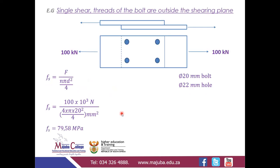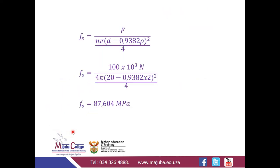Notice something important here: for the partially threaded bolt (threads outside shearing plane) we got 79.58 MPa, which is less than 87.604 MPa for the fully threaded bolt. This means the partially threaded bolt is stronger than the fully threaded bolt.